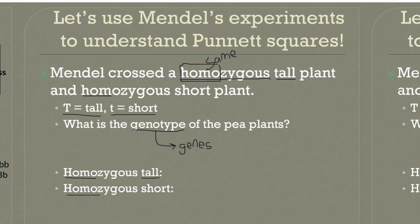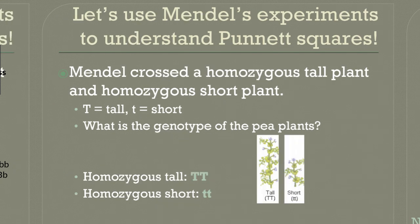What will the homozygous short genotype be? Pause for a second and see if you can figure this out. If you guessed homozygous tall would be capital T, capital T, you were correct. Homozygous short, since short is recessive, you should have two lowercase t's. So we're going to do a Punnett square now using these two pea plants — homozygous tall and homozygous short.